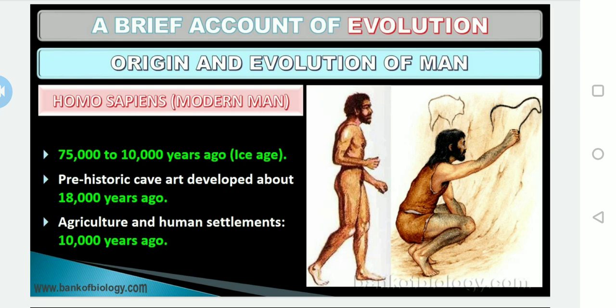Agriculture came around 10,000 years back and human settlements started. Homo sapiens evolved into other races: Caucasoids, Negroids, and Mongoloids. However, the original racial traits became diluted rather rapidly through interbreeding among the extensively migrating human population. These are important characteristics with respect to Homo sapiens.